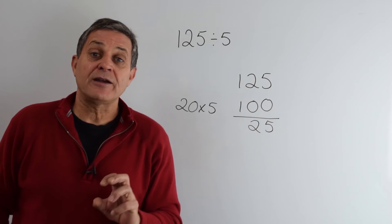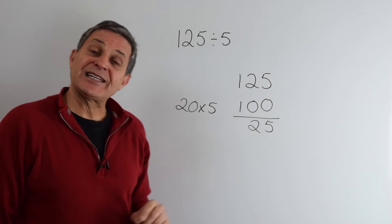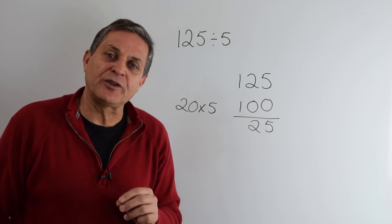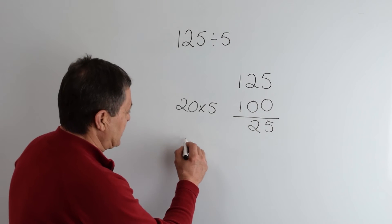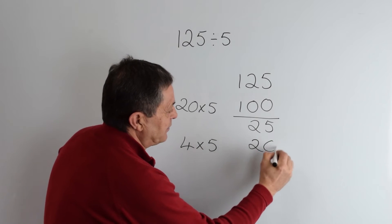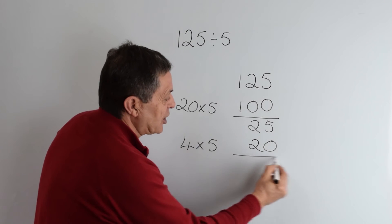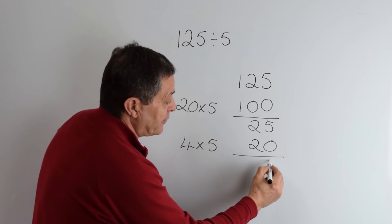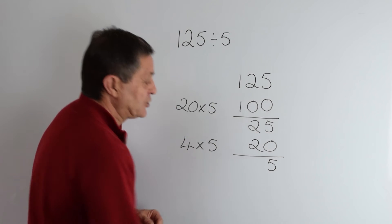We then think about another chunk, 20, and we know a simple multiple there. 4 times 5 is 20. We take that chunk away, 0 from 5 is 5, 2 from 2 is 0.